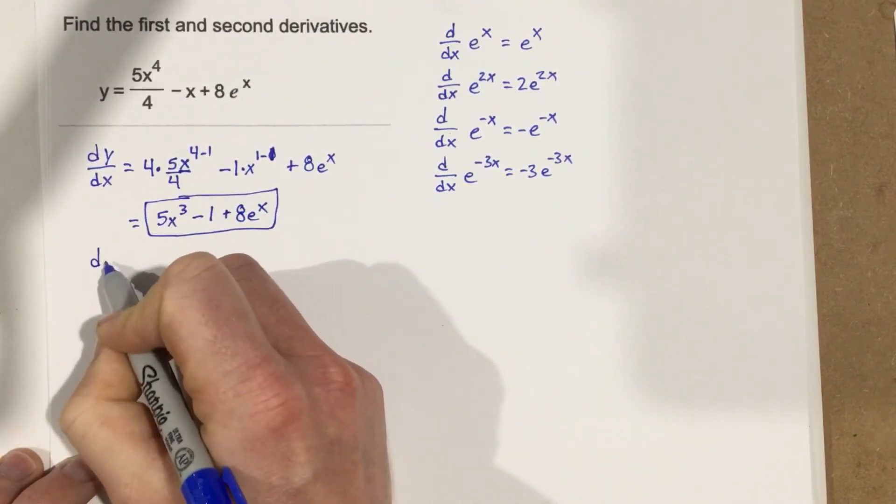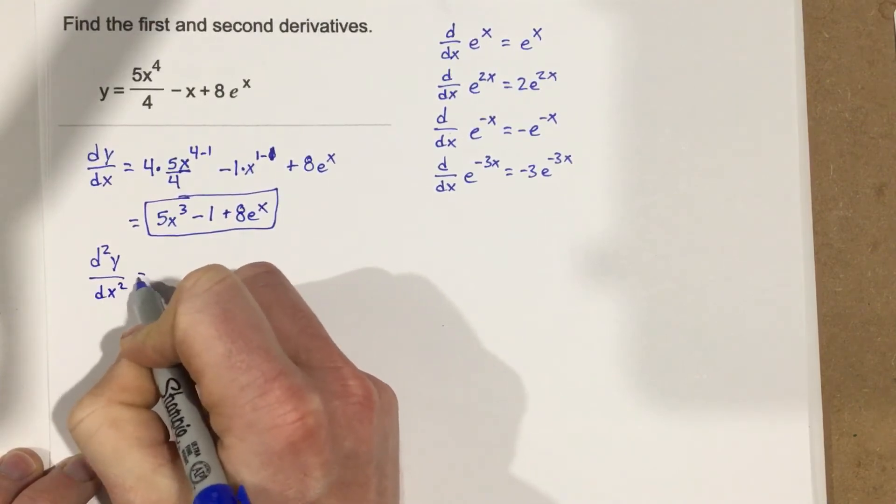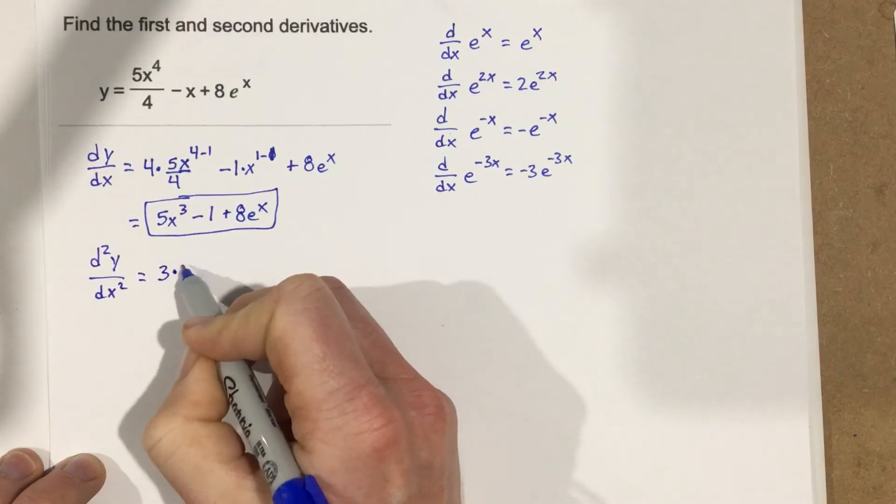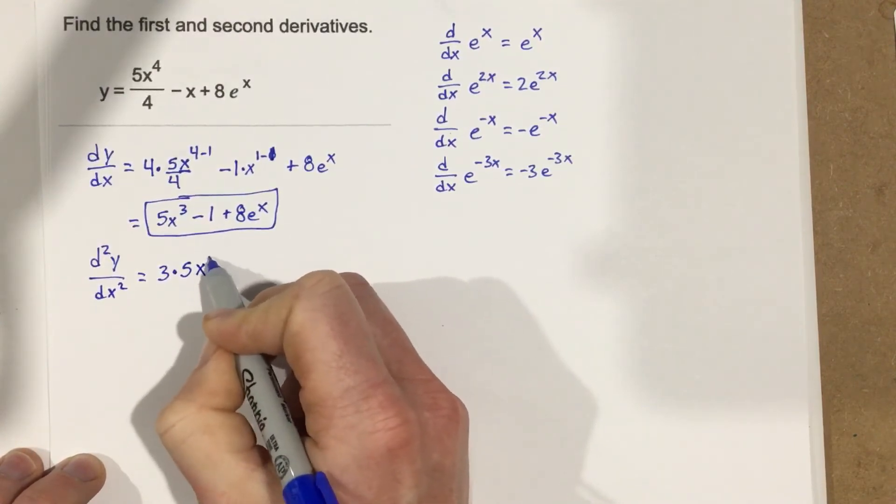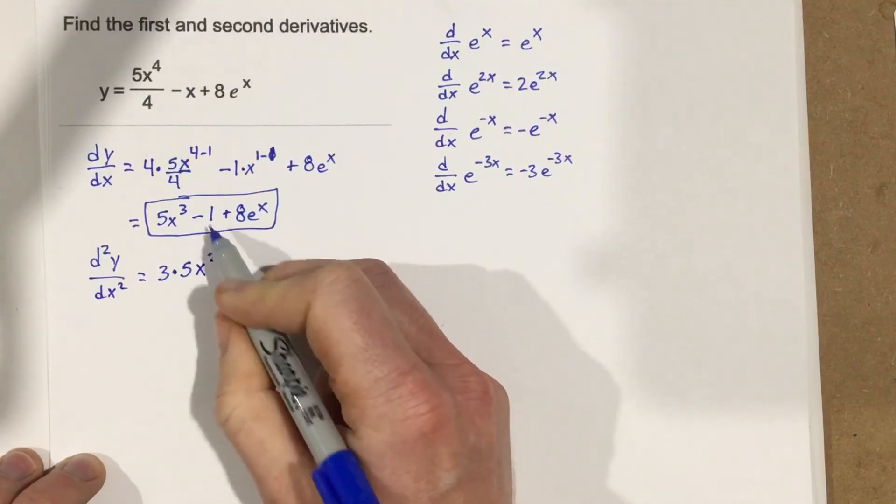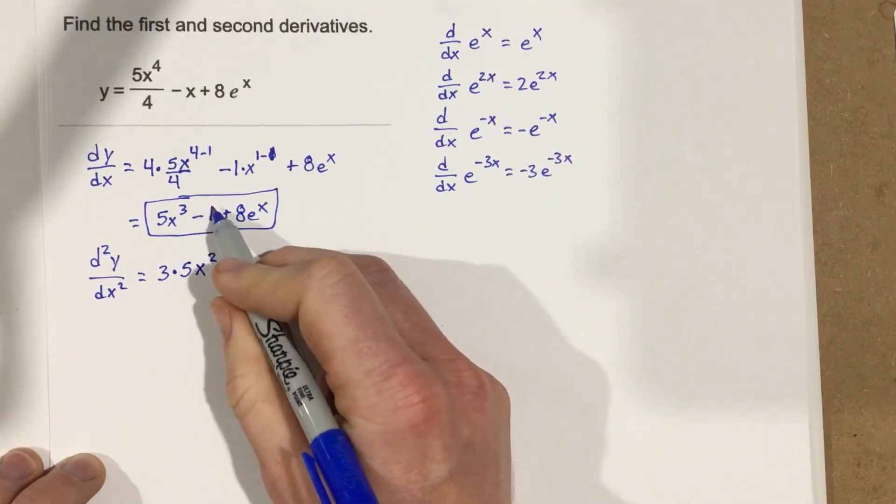The second derivative, with respect to x, is going to be, bring the 3 to the front, so 3 times 5x squared, subtract 1 from the 3. The derivative of negative 1, derivative of a constant, is just 0, so that's gone.